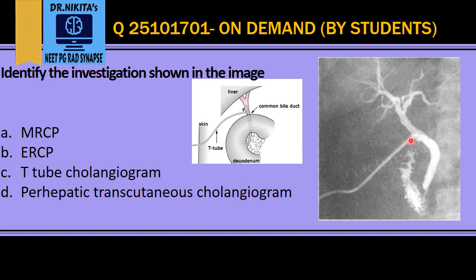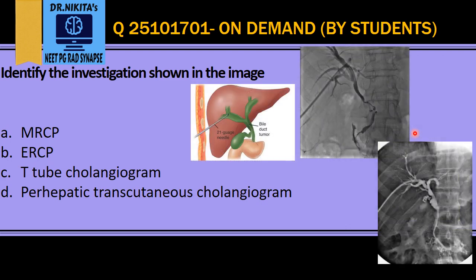Next, this is a T-tube cholangiogram. How do you identify this? You would see a T-tube going from the skin surface towards the CBD, and it has a limb like the letter T — that is why it is called a T-tube — which goes into the CBD. So here we see the T-tube, the limbs of which are going into the CBD. That is a T-tube cholangiogram.